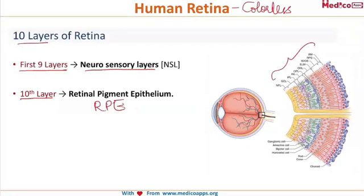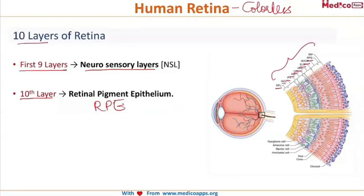To name these layers: the first layer towards the vitreous is the nerve fiber layer, followed by the ganglion cell layer, then the inner plexiform layer (IPL), the inner nuclear layer, the outer plexiform layer, the outer nuclear layer, the external limiting membrane, the layer of rods and cones, and finally the retinal pigment epithelium.